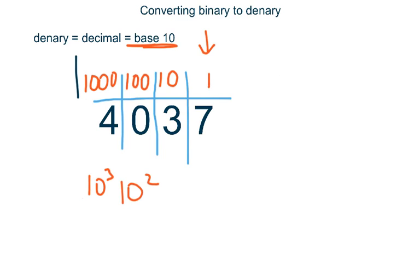If we had a bigger number, so more digits on the left-hand side, we would continue to go up in powers of 10. 10 to the power of 4, which is 10,000, then 10 to the power of 5, etc.